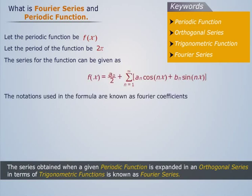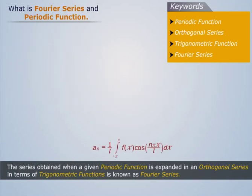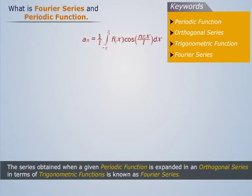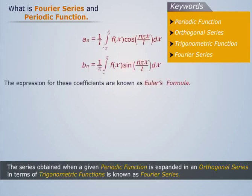The notations used in the formula are known as Fourier coefficients. The Fourier coefficients can be given as a_n, b_n. The expression for these coefficients are known as Euler's formula.